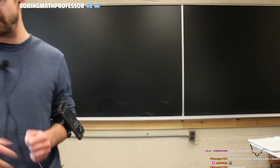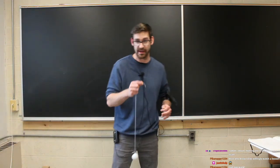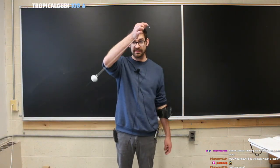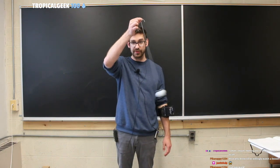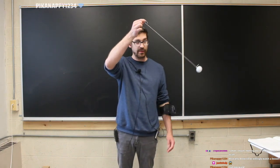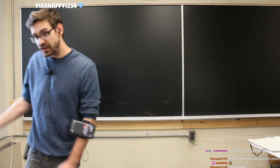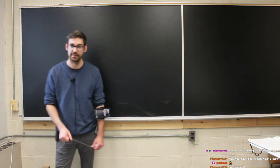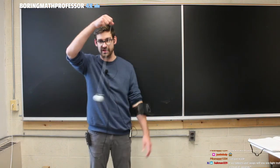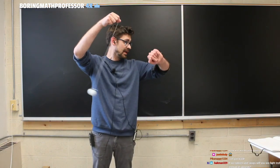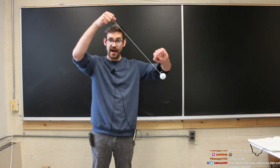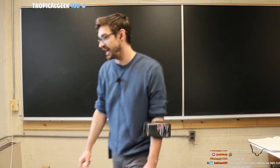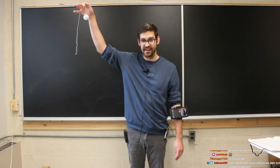Periodic things look the same forward and backwards. For example, this is a pendulum — if I were to swing it and let it go for a couple of seconds, then play the footage backwards, it would look the same. Maybe my mouth moving would look different, but just the pendulum's motion would look the same.